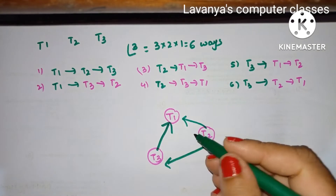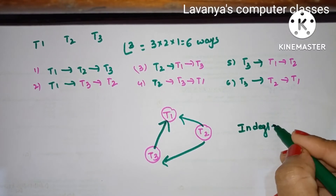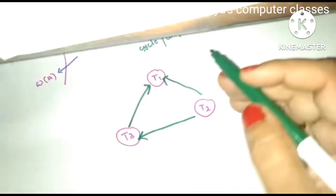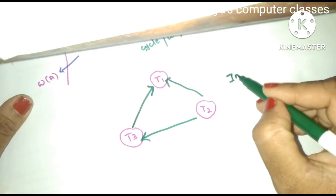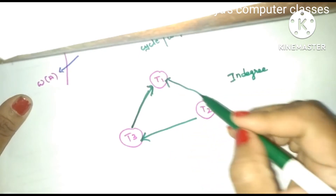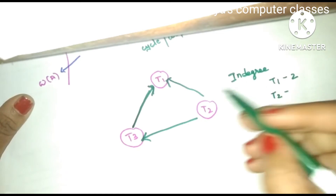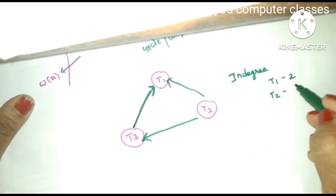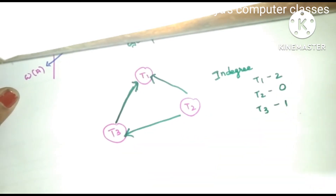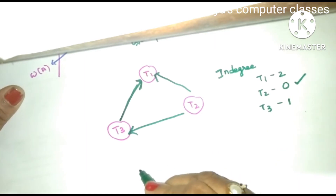Which of these six possibilities applies to our example? In the precedence graph, it is a directed graph. First, find the in-degree of each node and select the node with in-degree 0. The in-degree of T1 is 2, in-degree of T2 is 0, and in-degree of T3 is 1. So we select T2 first.